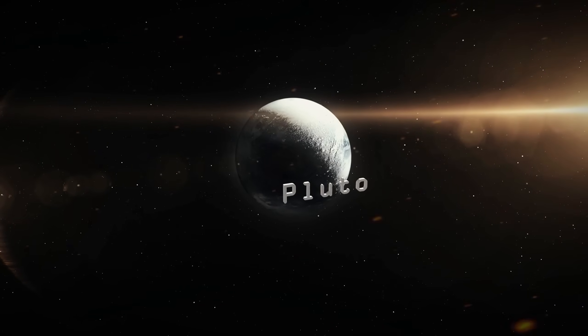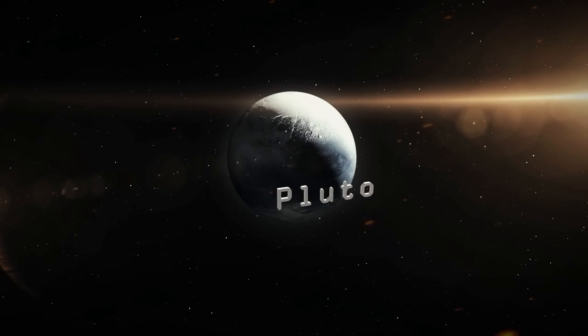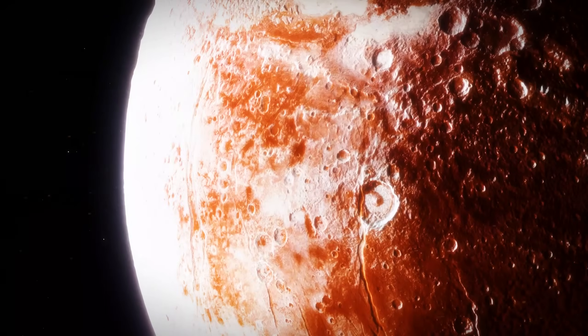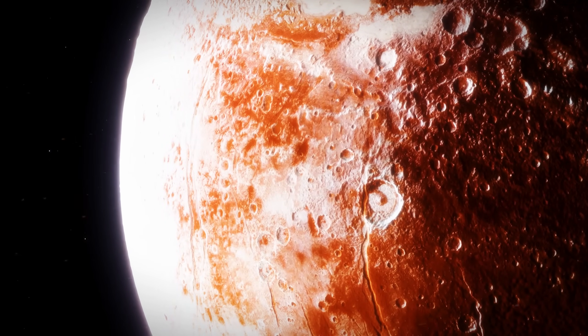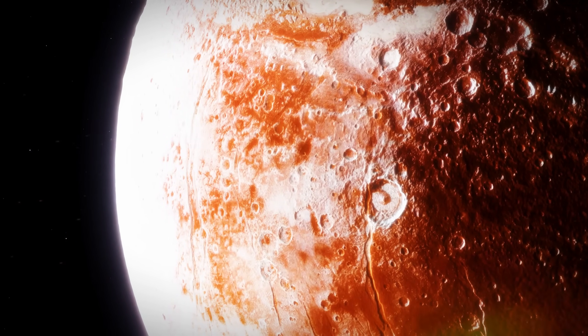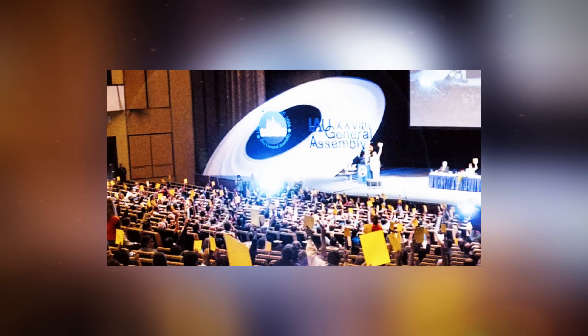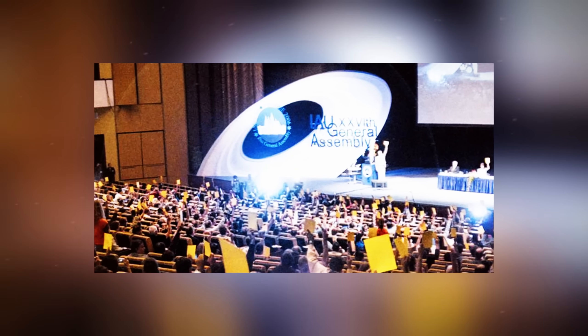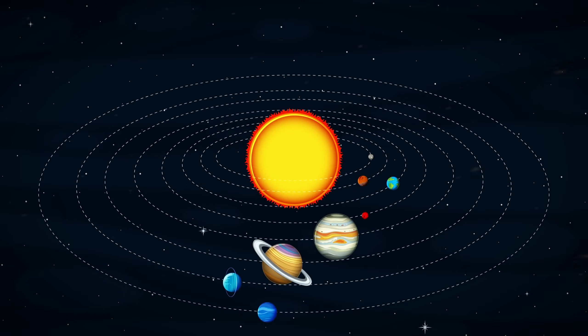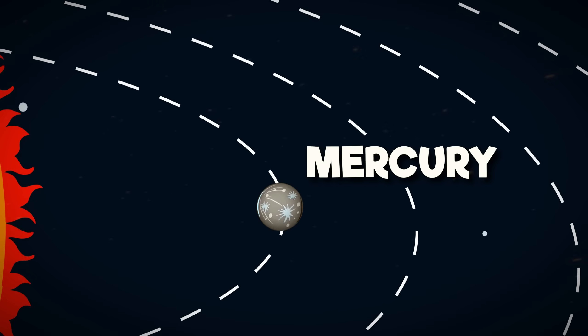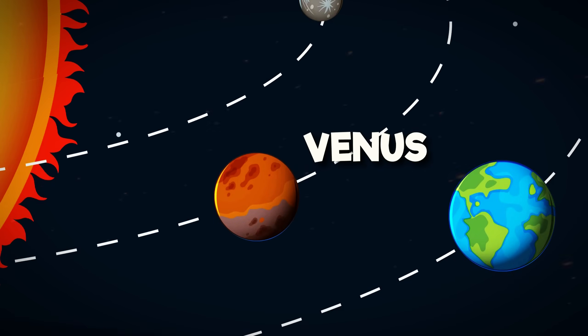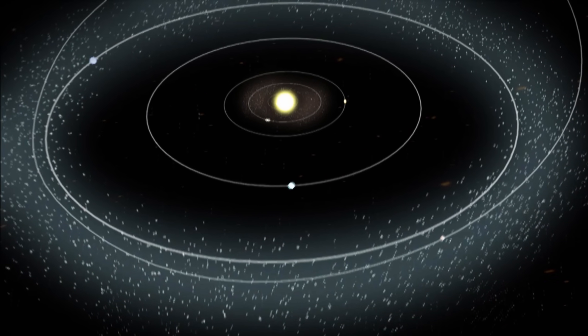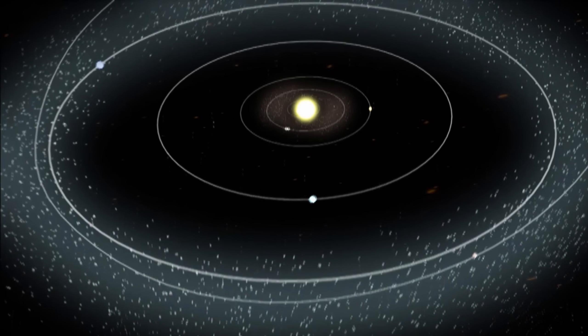Pluto holds a special place in astronomy history as it was once classified as the ninth planet, a title it held for many years. However, with the discovery of more KBOs, some even larger than Pluto, the International Astronomical Union redefined the criteria for a planet in 2006. Pluto is now classified as a dwarf planet, yet it remains a pivotal discovery in our solar system's exploration. Without its discovery, we might not have pursued the study of the Kuiper Belt as extensively as we have today.